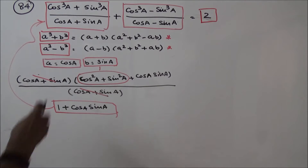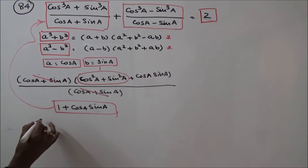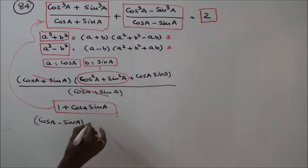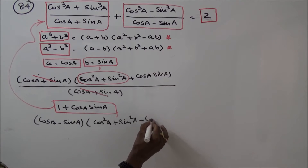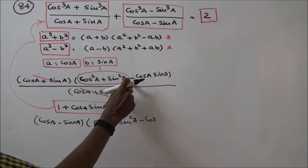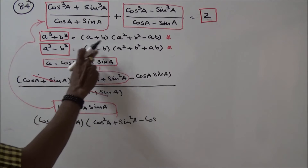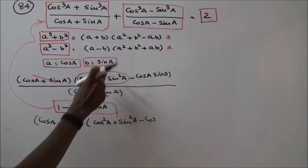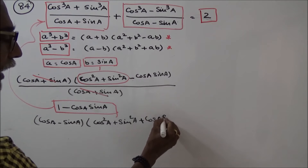For the second part, using a³ minus b³, the numerator becomes (cosA minus sinA)(cos²A plus sin²A minus cosA·sinA). Wait — correcting: a³ minus b³ gives (a minus b)(a² plus b² plus ab), so this becomes (cosA minus sinA)(cos²A plus sin²A plus cosA·sinA).